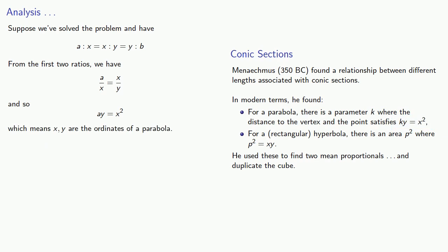But wait, there's more. If we take a look at the first and last ratios, we can read these as the equality a over x equals y over b, and cross multiplying gives us ab equals xy, which means that x, y are the ordinates of a hyperbola. And what this means is we can find these two mean proportionals by looking at a specific parabola and a specific hyperbola and seeing where they intersect.